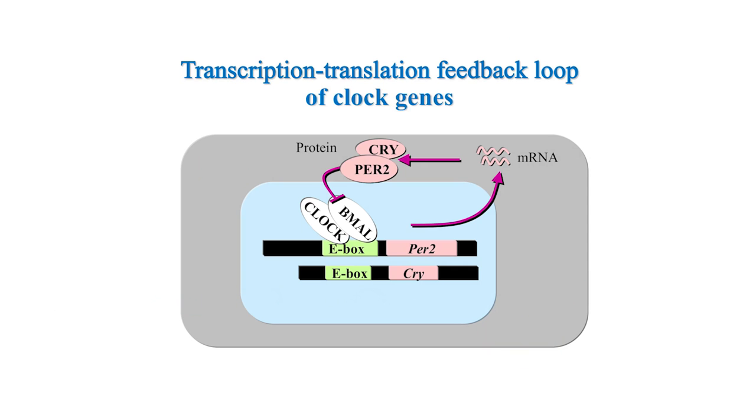PER2 is an important core clock component that generates circadian rhythms at the molecular level through transcription-translation feedback loops. PER2 protein levels exhibit circadian rhythms in the SCN and most tissues in the body. Luciferase fused to PER2 reports the level of PER2 protein.